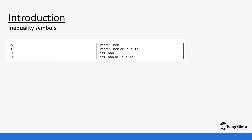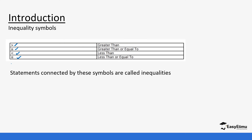So inequality — some of the inequality symbols. We have greater than; the symbol for greater than looks like this. And then we also have greater than or equal to. Whenever we have an equal to, you can notice the sign has another line at the bottom. And then we have less than, and then we have less than or equal to. The statements connected by these symbols are usually called inequalities.